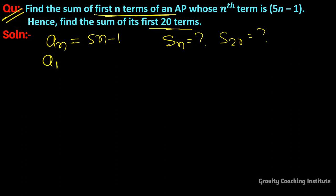The nth term is equal to the first term, so a₁ equals 5 into 1 minus 1, which is 5 minus 1 equals 4.